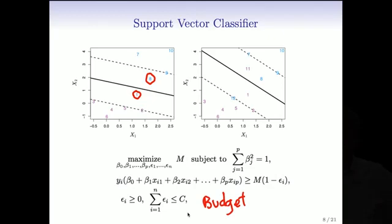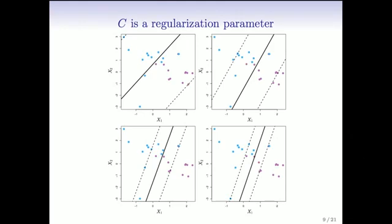C is a tuning parameter, and as we change C, this soft margin is going to get wider or smaller. Here we've got four scenarios where we've changed C. With the biggest C, all points end up on the wrong side of the margin, so there's an epsilon for every single point. You can draw arrows showing the distance of each point from the margin — the length of these arrows is proportional to the epsilons. As we tighten C, the margin gets tighter because we're allowing less and less overlap.